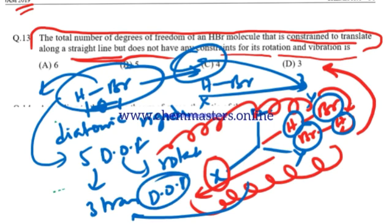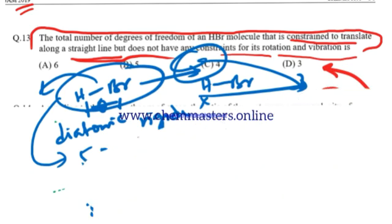Another possible way - we have 3 coordinates X, Y, and Z. Now I'm taking HBr perpendicular to X axis or X coordinate.